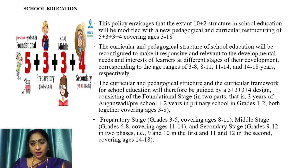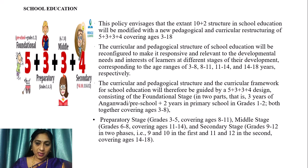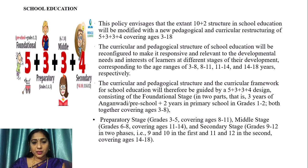The 5+3+3+4 design consists of: the Foundational Stage in two parts — three years of Anganwadi (preschool) plus two years in primary school (Grades 1 to 2), covering ages 3 to 8; the Preparatory Stage covering Grades 3 to 5 for ages 8 to 11; the Middle Stage covering Grades 6 to 8 for ages 11 to 14; and the Secondary Stage covering Grades 9 to 12 in two phases (Grades 9–10 and Grades 11–12), covering ages 14 to 18.